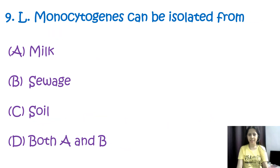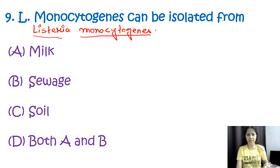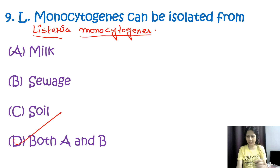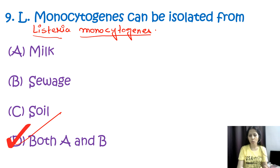Question number nine: Listeria monocytogenes can be isolated from — so L stands for Listeria. Listeria monocytogenes is a bacterium that can be found in various environments like milk or sewage. The correct option is D, both A and B. It is a foodborne pathogen capable of causing illness in humans, particularly those with weakened immune systems. It can be isolated from milk as well as from sewage.